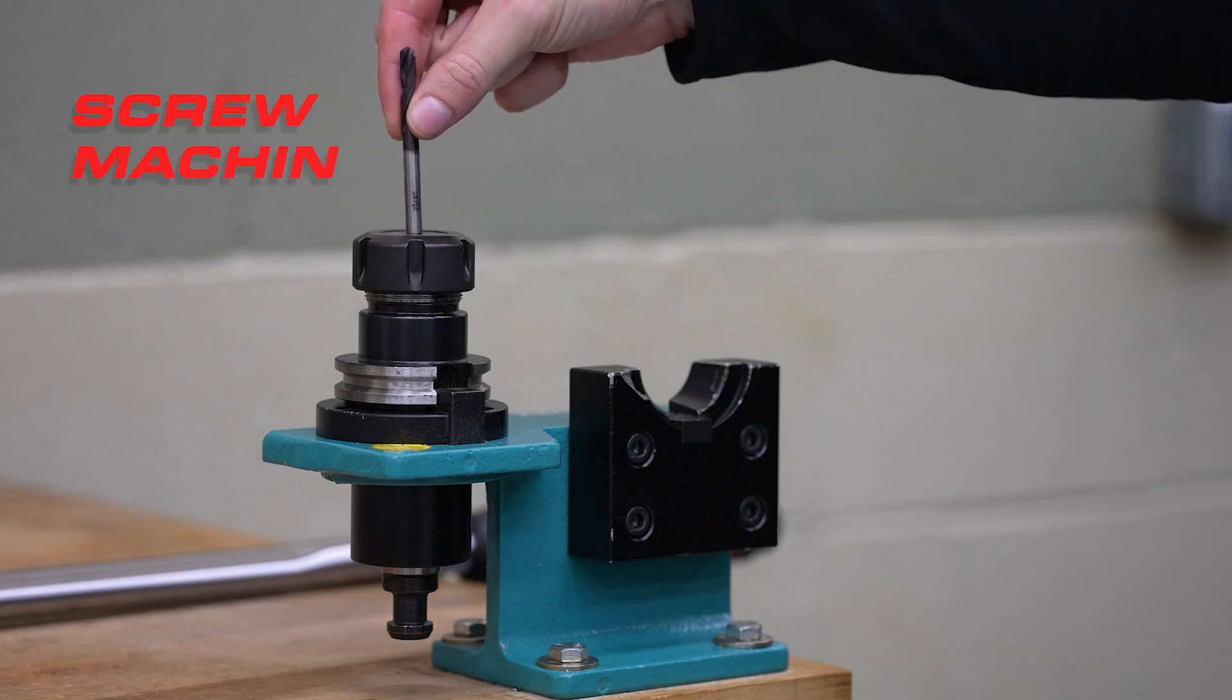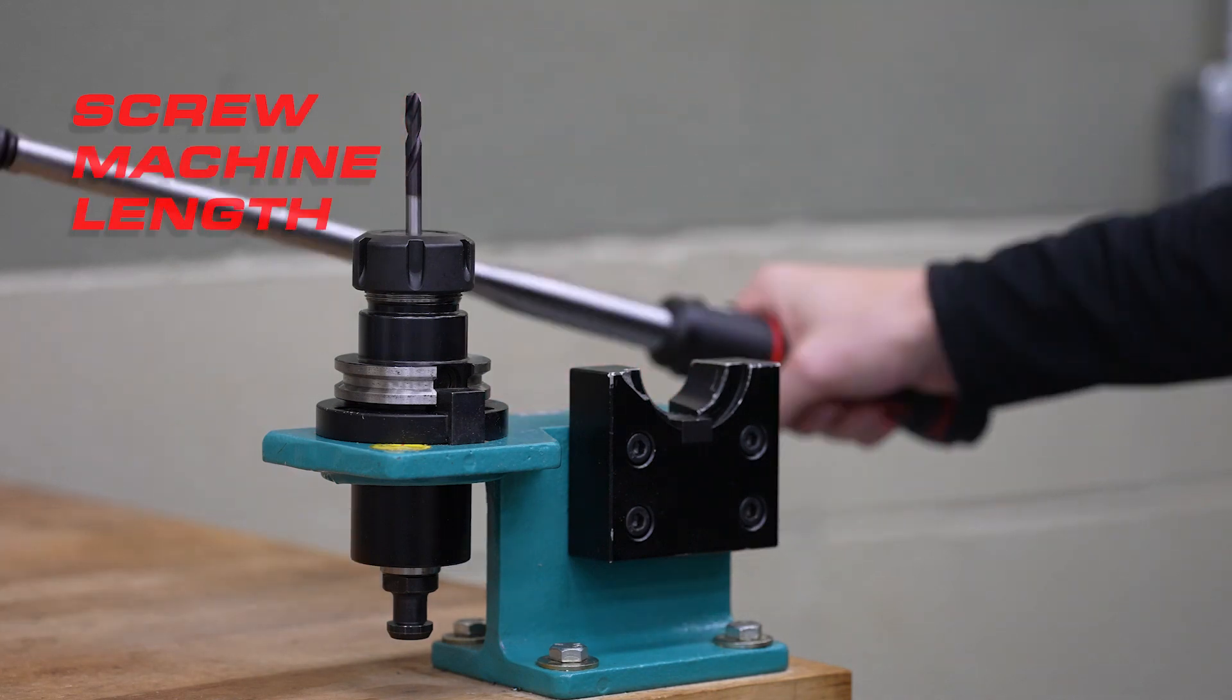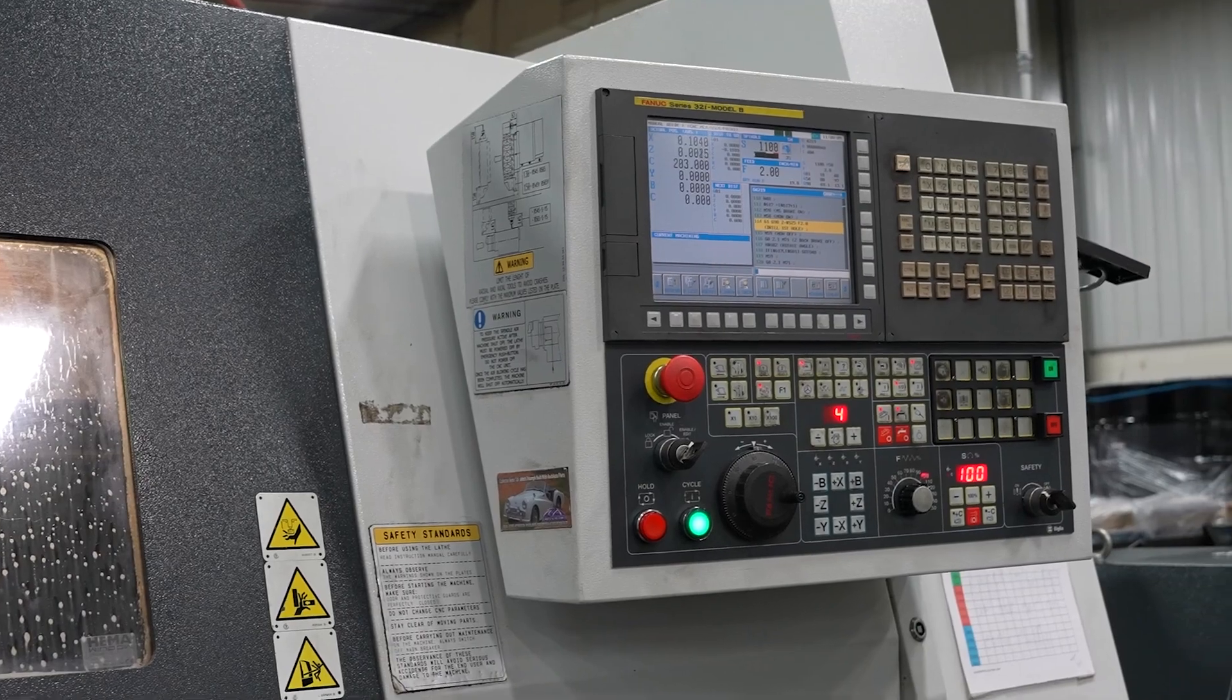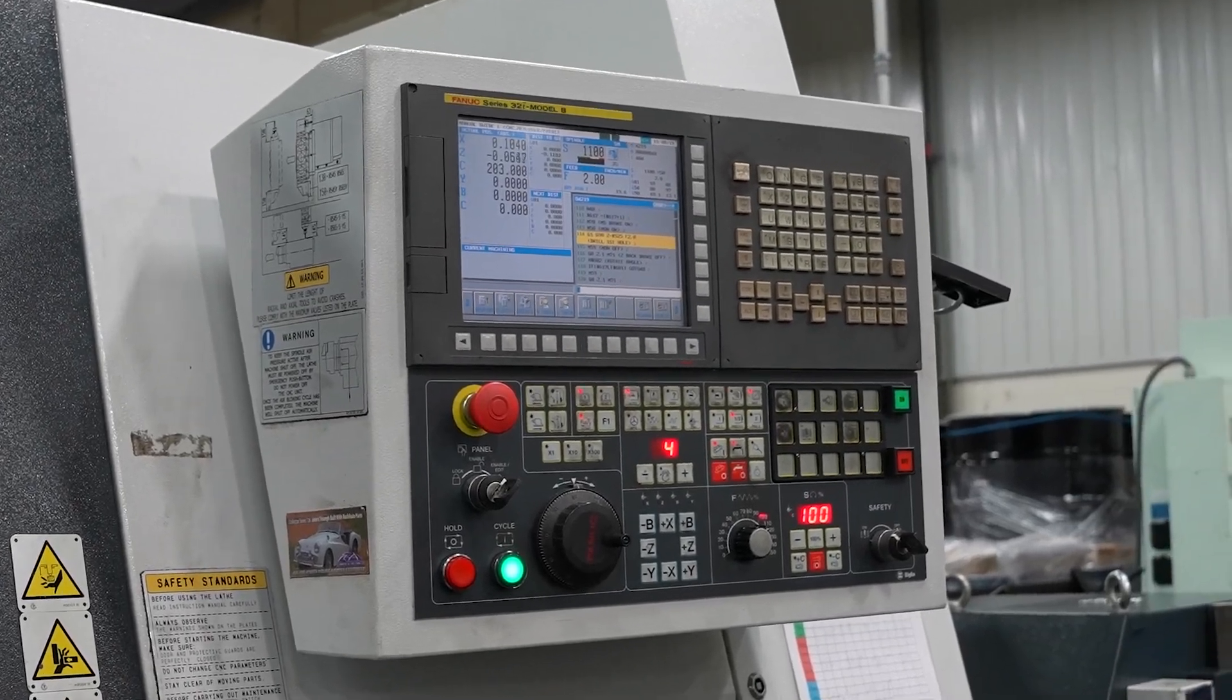Even shorter are screw machine drills. Sometimes you need a rigid drill that won't flex. These are great in precision equipment like CNC mills and lathes.